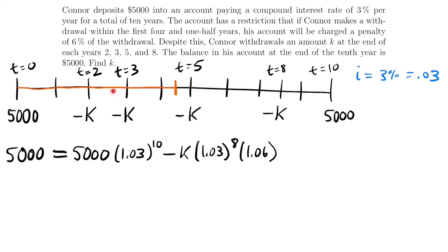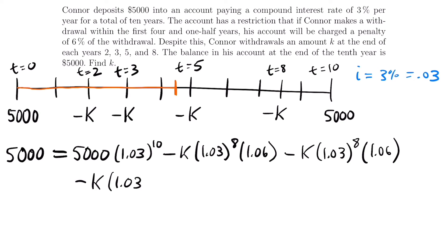Next, at t equals 5, we subtract K times 1.03 to the 5th power — five years remaining to t equals 10. Does this fall within the penalty period of the first four and a half years? No, it does not, so no 1.06 multiplier needed. Finally, at t equals 8, we subtract K times 1.03 squared, since there are just two years from year 8 to year 10. No penalty applies here either.